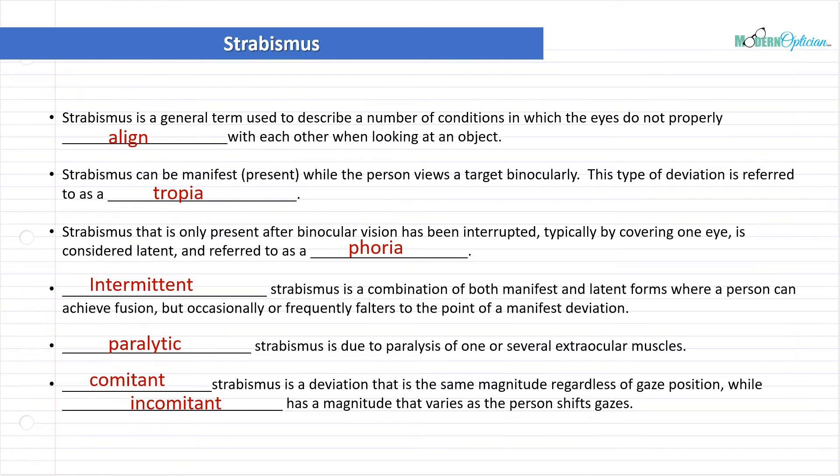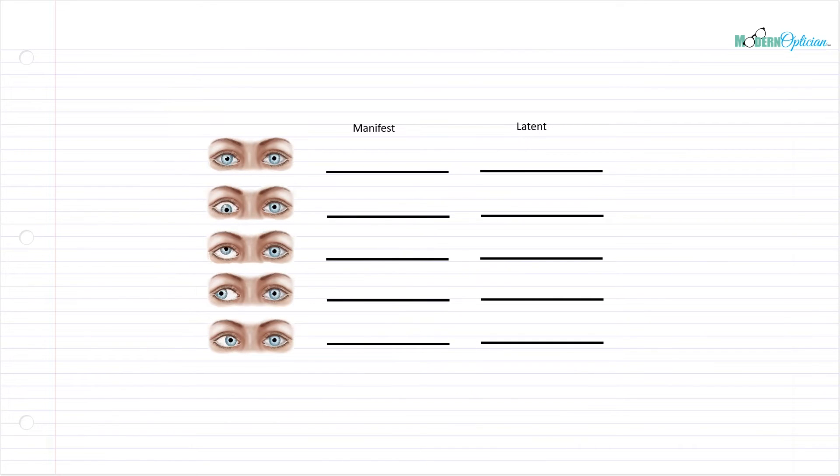Now that we understand the terms, we can actually apply some of this stuff to the way it would actually look when you were looking at a patient. So here are a bunch of eyes. We're going to go through the manifest and latent forms of each. Try to test yourself and see if you can understand. The first one, both eyes are looking directly at us. What is it? It is ortho, normal. Whether it's manifest or latent, there are no manifest or latent forms of this. It's all the time. Everything's good. Straight ortho.